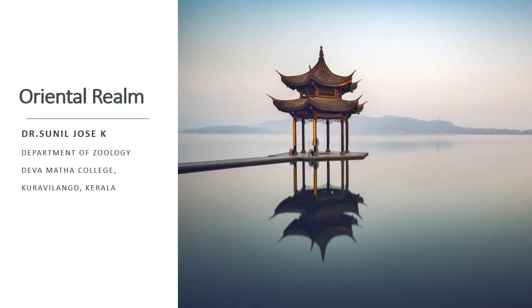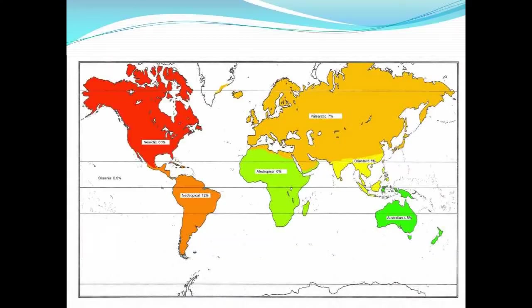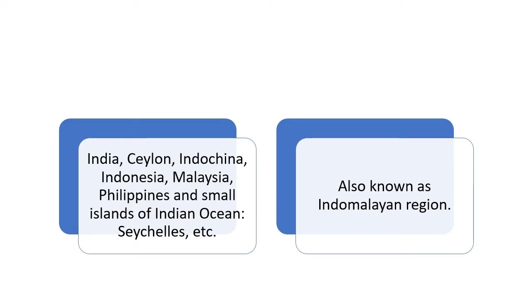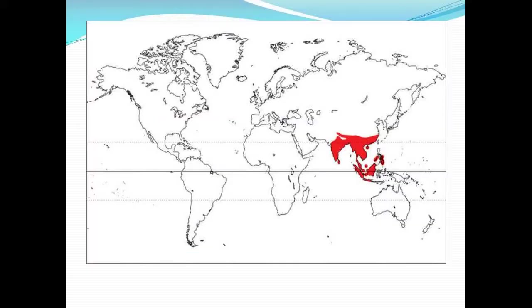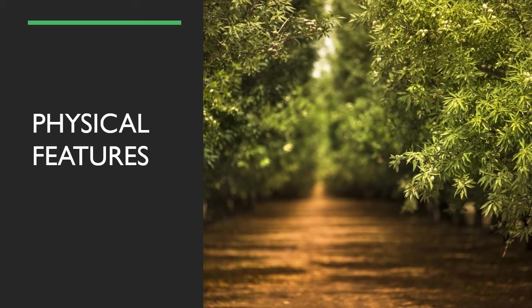We will now study about the Oriental Region. Oriental region means any region in the east — the orient means east. This region mainly consists of India, Ceylon (that is Sri Lanka), Indo-China, Indonesia, Malaysia, Philippines, and several small islands around the Indonesian islands. Because of the importance of the Malayan Archipelago, this region is also known as the Indo-Malayan Region.